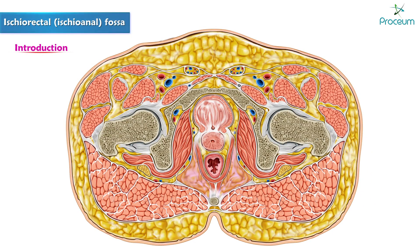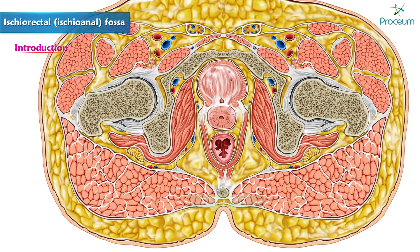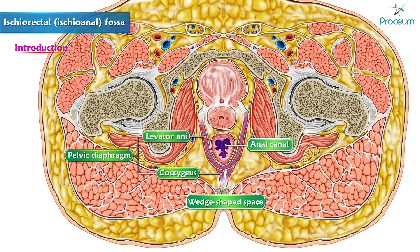Anatomy of the Ischiorectal, also known as the Ischioanal Fossa. The Ischiorectal Fossa is a wedge-shaped space situated on either side of the anal canal below the pelvic diaphragm.